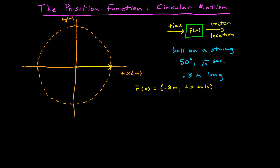At a tenth of a second later, we look at our dot for our motion diagram — it's at angle 50, about right there. The vector that corresponds to that position is that yellow vector. The vector at t equals 0.1 has a magnitude that's exactly the same, and we know that this is now 50 degrees counterclockwise from the positive x axis.